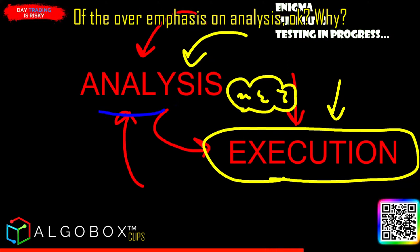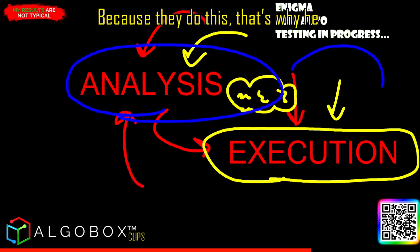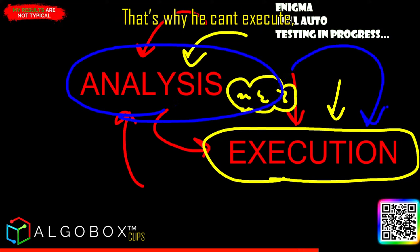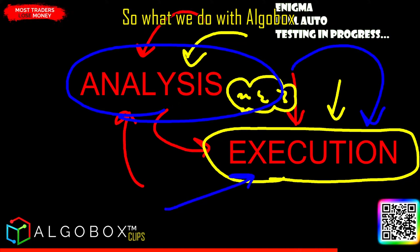Over-emphasis on analysis. Why? Because they can't do this. That's why he doesn't have a track record. That's why he can't execute, why he can't actually trade. Because I believe trading is this execution.